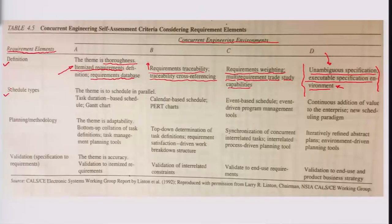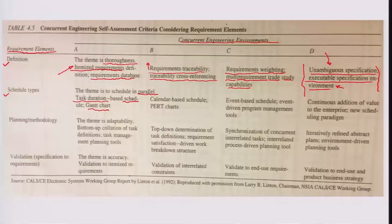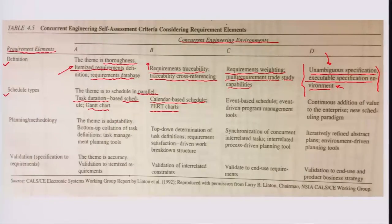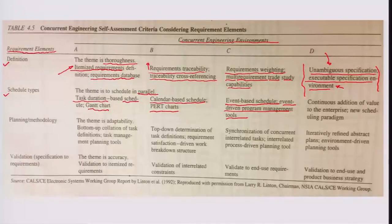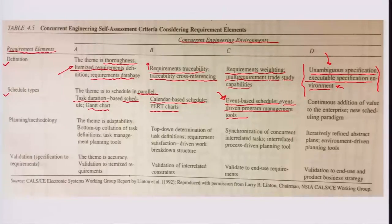Schedule types are also mentioned, where the theme is running in parallel. Schedules could be based on task duration — individual tasks split up from the whole work and Gantt charts plotted accordingly. There could also be a precedence requirement put on all tasks — what precedes what — and then a calendar-based schedule which talks about what point in time on the planning horizon the schedules are running parallel to each other. There could also be event-based schedules where event-driven program management tools are used — for example, if there is a shortage of some material, what tasks exist for meeting that particular shortage. That forms level C.